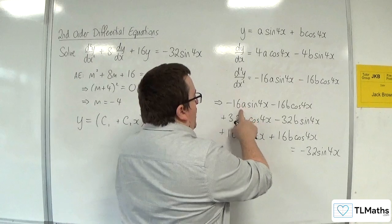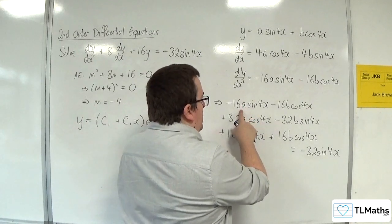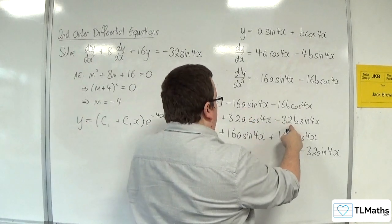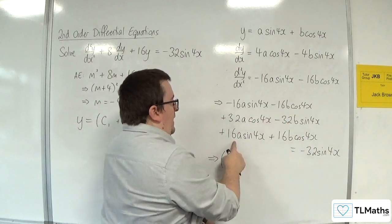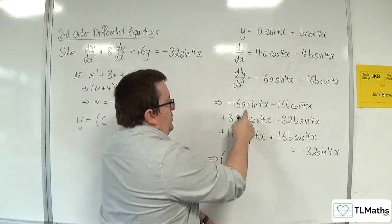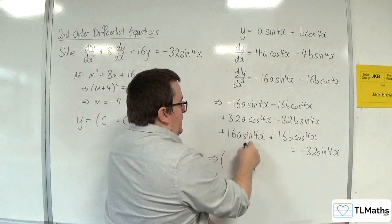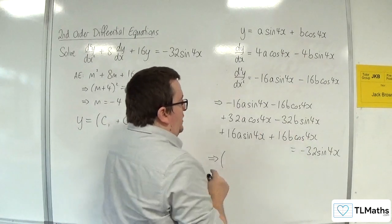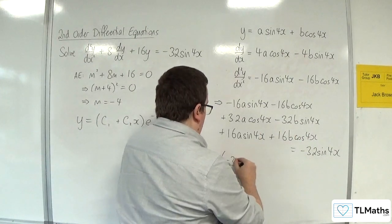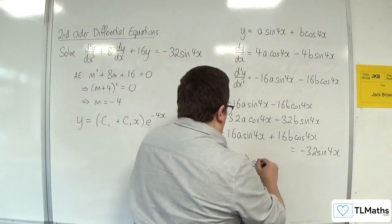we've got -16a, we've got -32b, and we've got 16a. Now of course those two terms are going to knock each other out. So we're just going to have the -32b sin(4x).